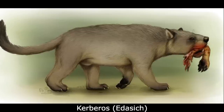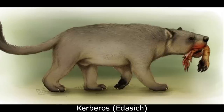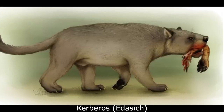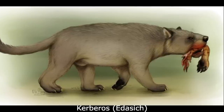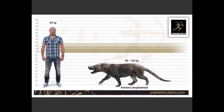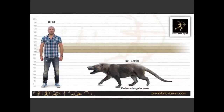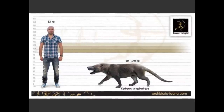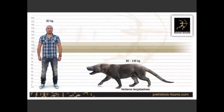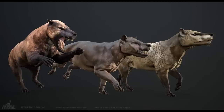Both Kerberos and its close relative Pterodon were much bigger than the endemic Provivereids discussed earlier and hunted bulkier prey. Kerberos in particular weighed up to 140 kilograms or 308 pounds, and possessed powerful jaws, crushing premolars, and a strong neck in order to subdue struggling prey.